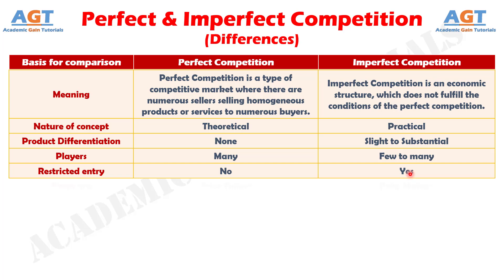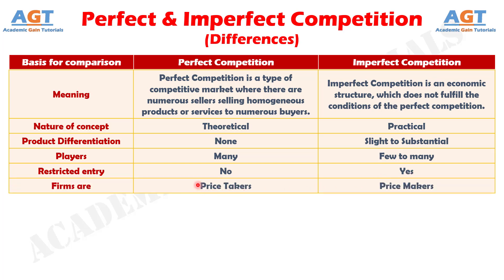Difference number six: in perfect competition it is assumed that the firms do not influence the price of a product, hence they are price takers, but in imperfect competition the firms are price makers.